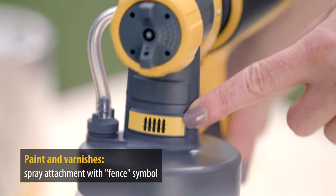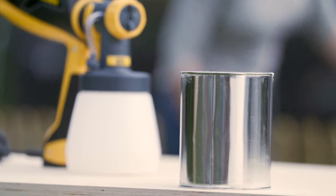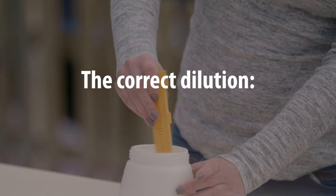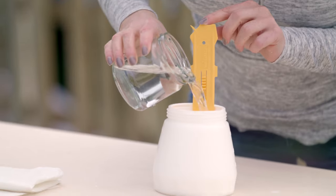Of course, you can use all commercially available paints and varnishes. In general, Flexio Universal spray units can spray paints straight from the can without the need for dilution.